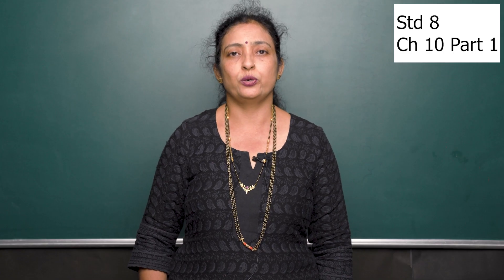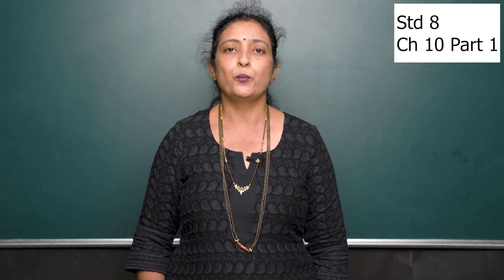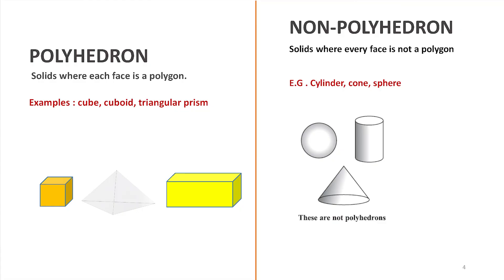Now let us move to the next subtopic: polyhedron. A polyhedron is a solid figure where each surface is a polygon. Examples: cube, cuboid, and a triangular prism. Solids where every face is not a polygon are called non-polyhedrons. Examples: cylinder, cone, sphere, and many other such examples.